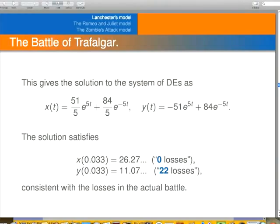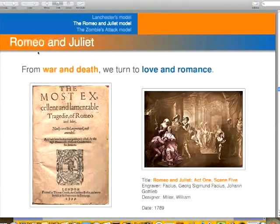And if you do some computations just using again the solve command in SAGE, you can find out when the battle roughly is over. We historically know that there are no losses on the British side. There are 22 losses, which means we want something around 11 on the other side. So that gives us the amount of time that has elapsed, and that's consistent with the losses in the actual battle.